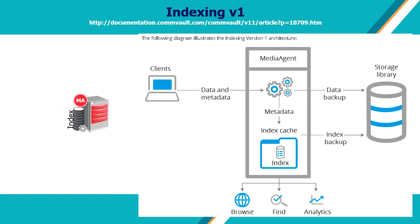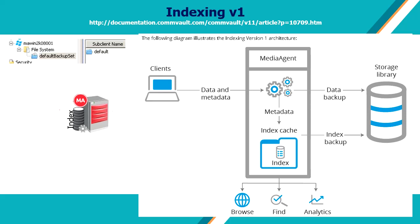In Commvault, indexing version 1 was used until version 10. From version 11, they switched to indexing version 2. As per Commvault, the following diagram illustrates the indexing version 1 architecture, which is the original Commvault indexing architecture. In version 1, indexing occurs at the sub-client level.